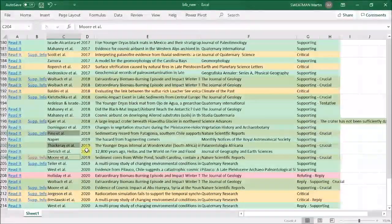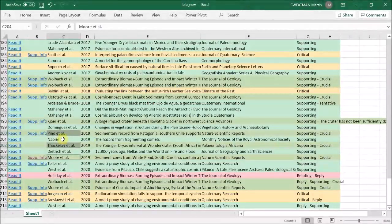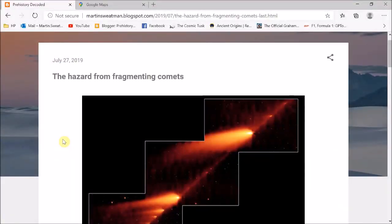Now I've already reviewed this paper by Napier on my blog and you can find the link here. This is his paper, The Hazard from Fragmenting Comets.